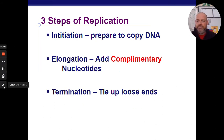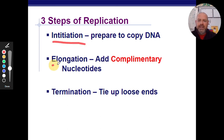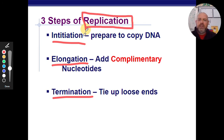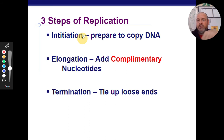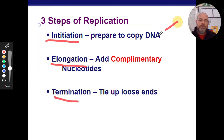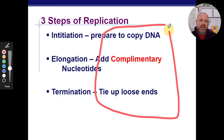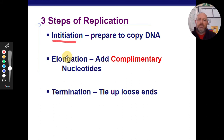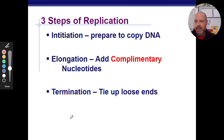There are three steps of replication: initiation, elongation, and termination. These same three steps apply to transcription and translation as well — the words stay the same, but what happens during each step changes depending on the process. For replication: initiation is preparing to copy DNA, elongation is adding the nucleotides, and termination is tying up loose ends and making sure everything went okay.